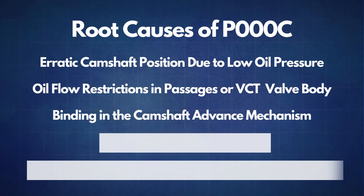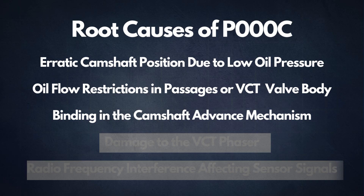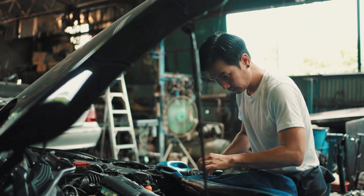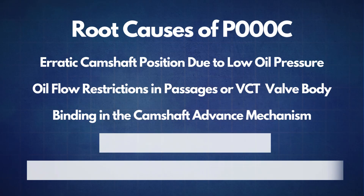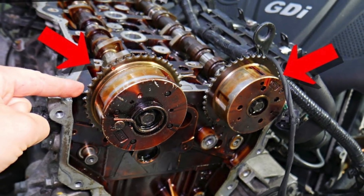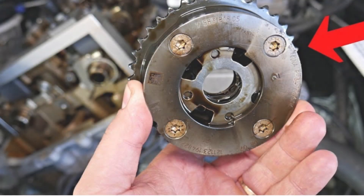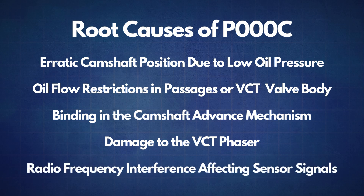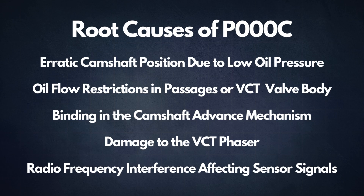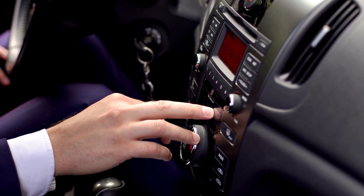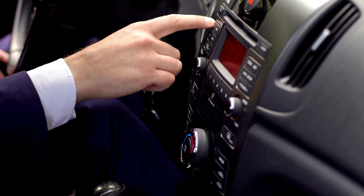The third cause is binding in the camshaft advance mechanism. If the VCT unit is binding, it may prevent the camshaft from advancing or retarding as it should, which could trigger the P000C code. The fourth cause is damage to the VCT phaser — a damaged phaser controls the angle of the camshaft, and if it's malfunctioning, you'll likely see error codes like P000C. The fifth cause is radio frequency interference affecting sensor signals, which can cause the ECU to register a camshaft misalignment.